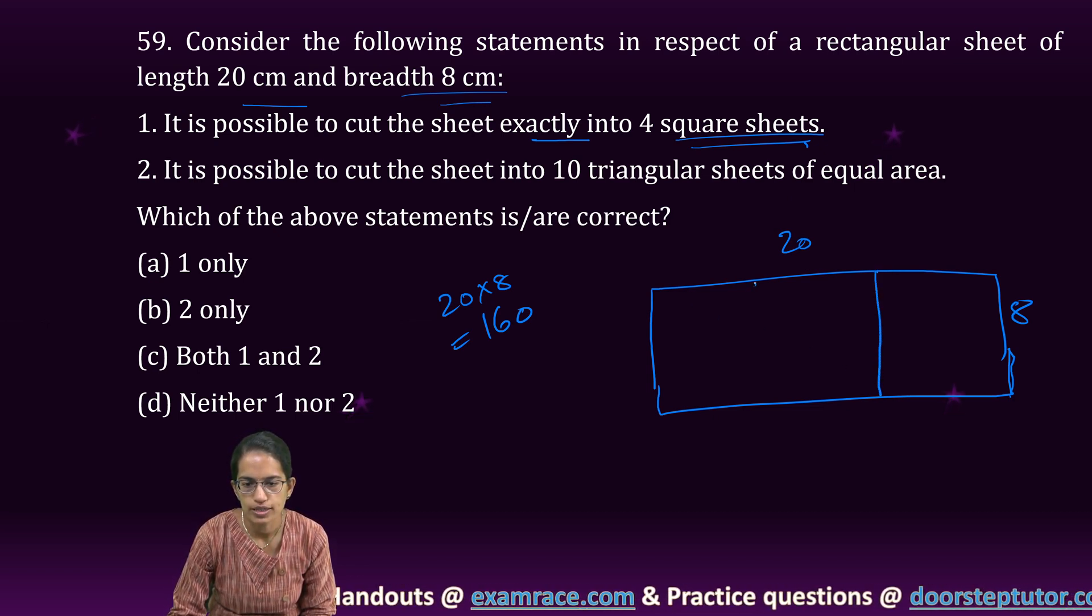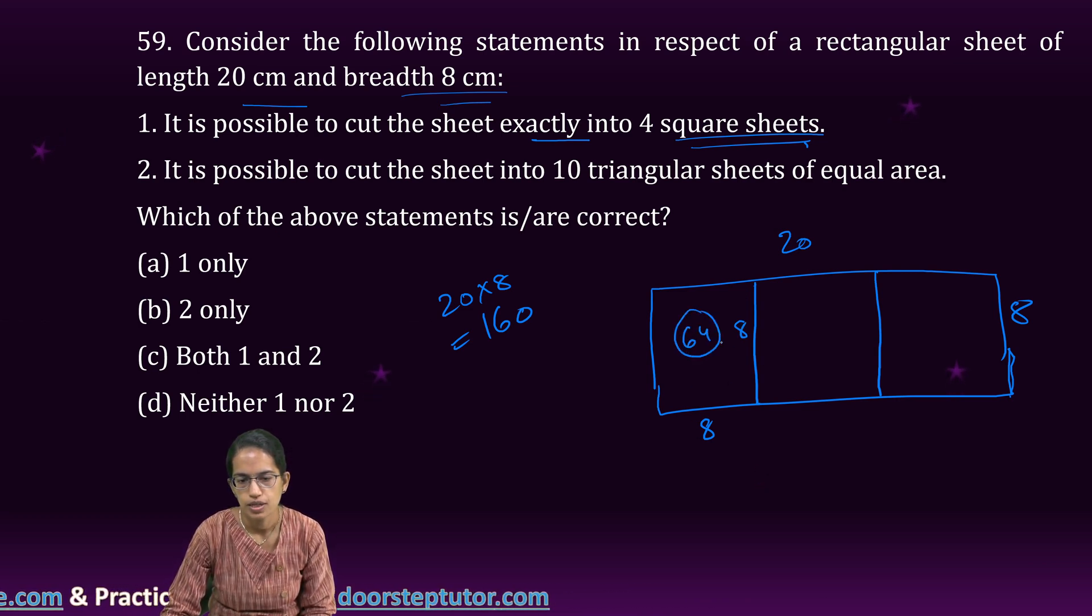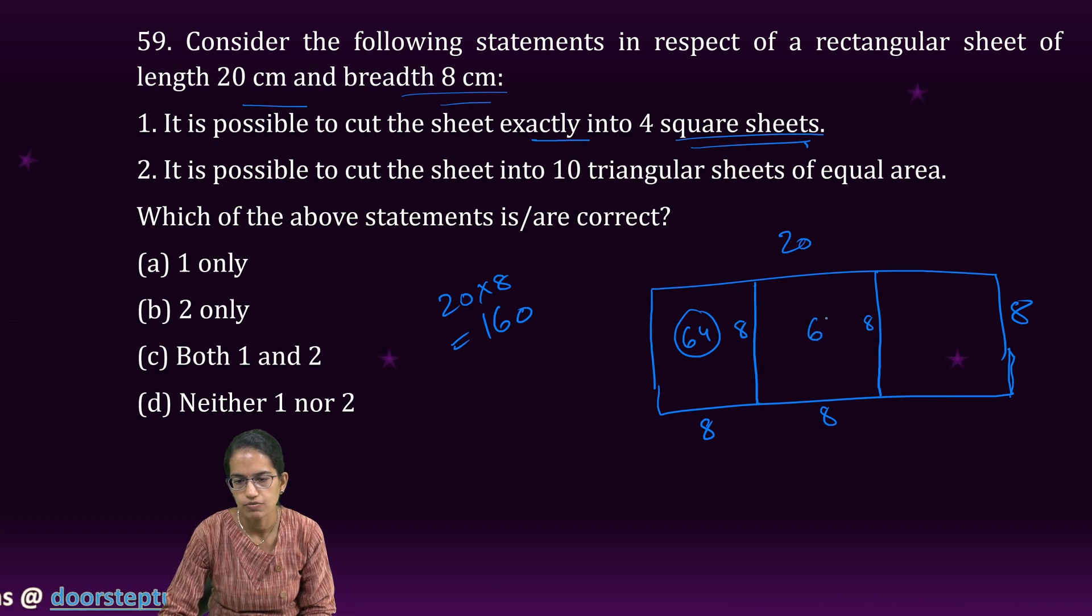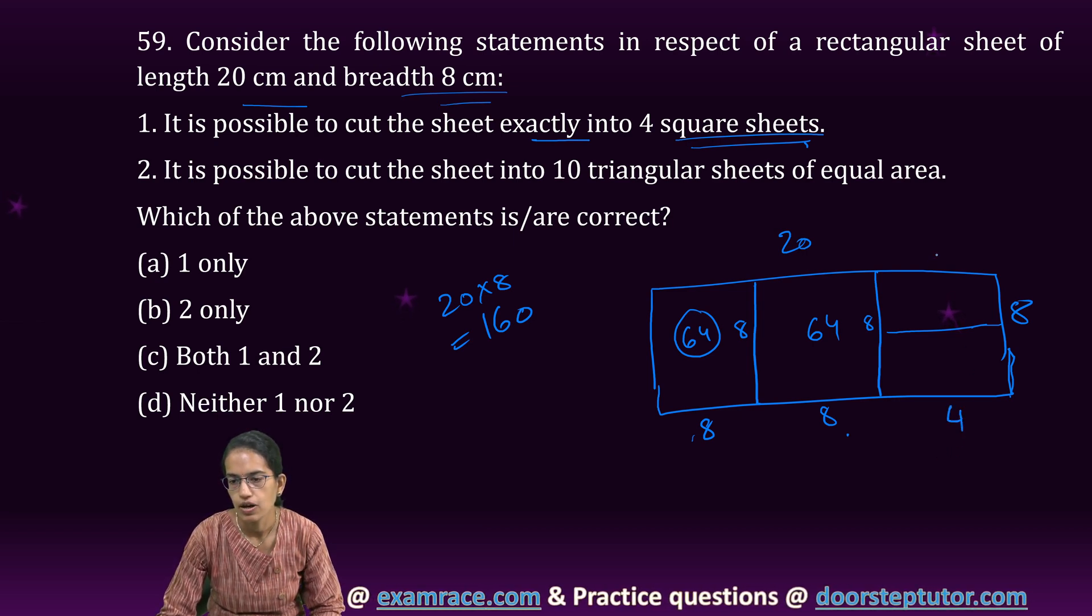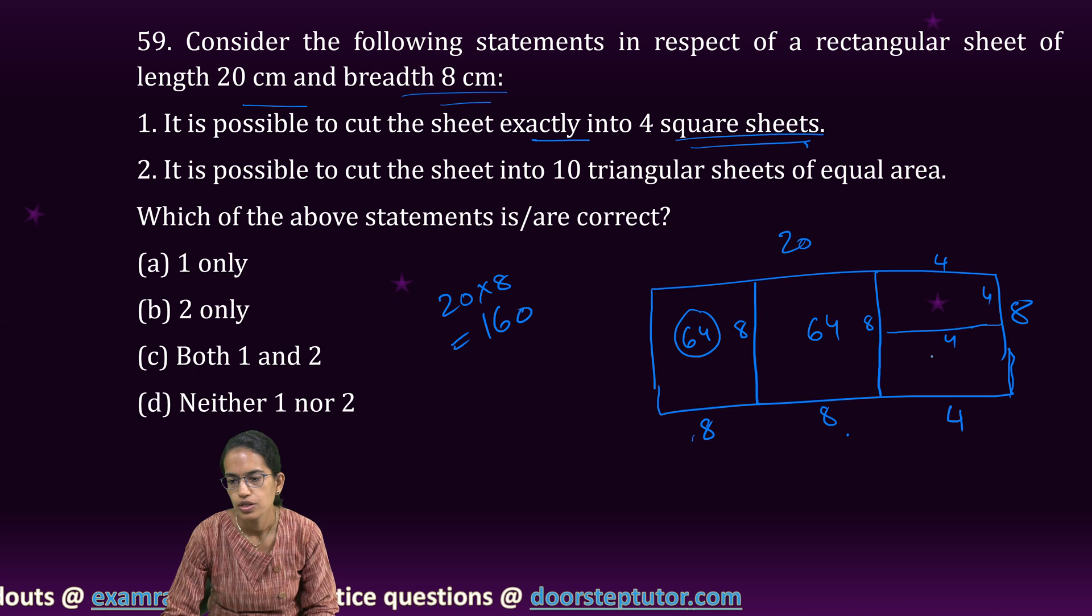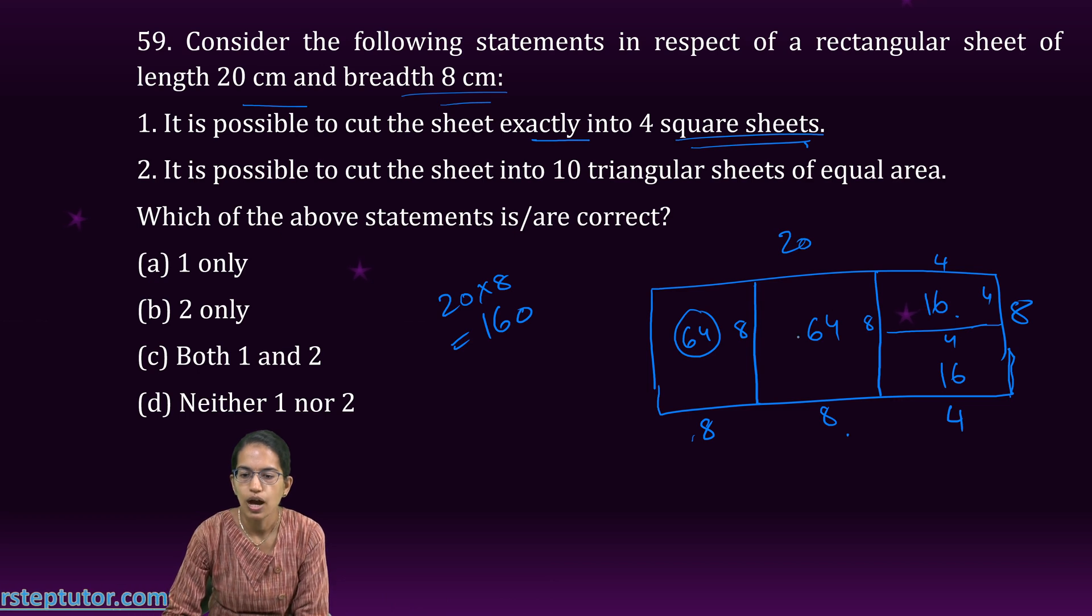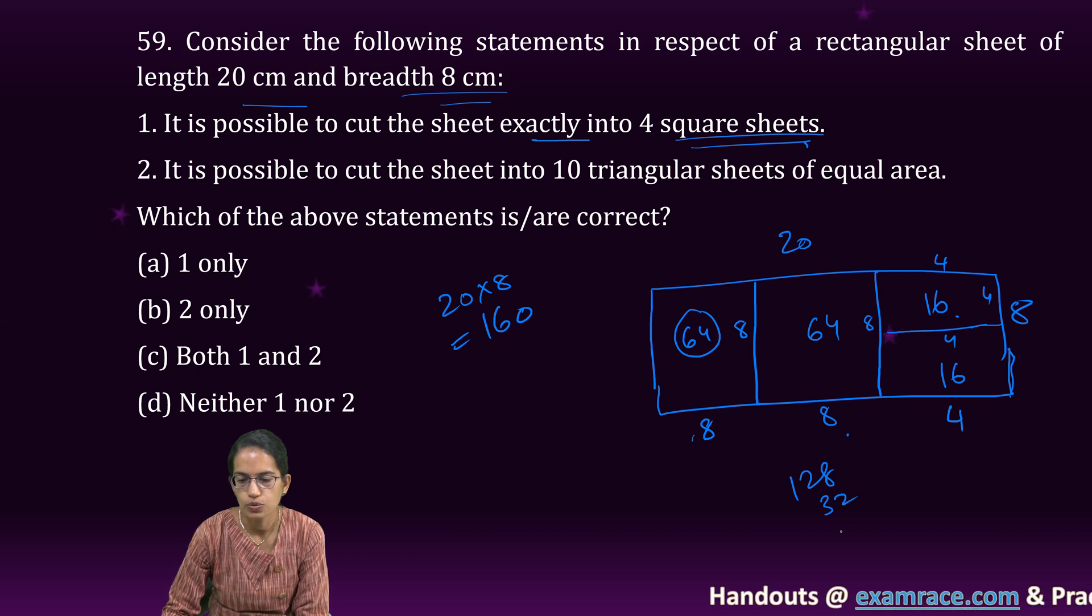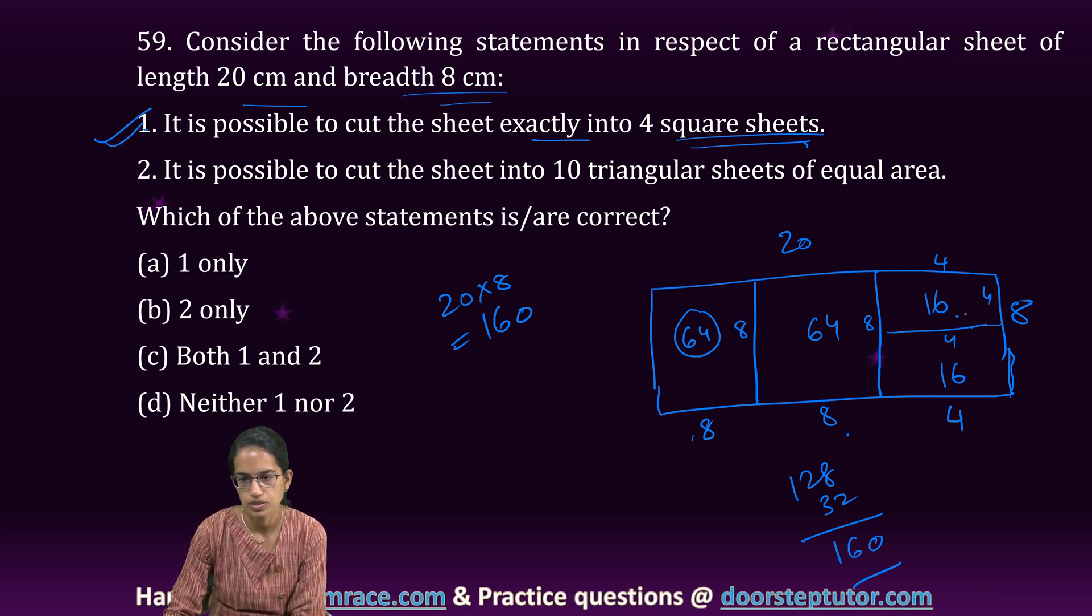I would have 8 by 8 square, that's 64. Another square 8 by 8, again 64. Then 4 by 4 squares. So 4 by 4 is 16 and then again 16. So 16, 16, 32, 64, 64 is 128 and 32, that is 160. That gives me a perfect answer. 1 is definitely possible.